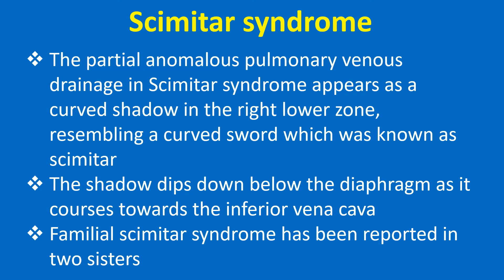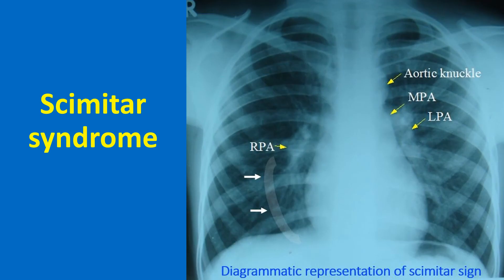Familial Scimitar syndrome has been reported in two sisters. A diagrammatic representation of the Scimitar sign in chest X-ray is shown, with a diagram of the partial anomalous pulmonary vein draining towards the inferior vena cava from the right lung superimposed on a chest X-ray and marked by white arrows.